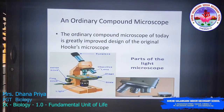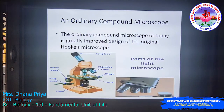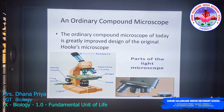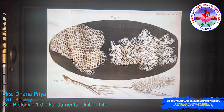In this compound microscope, you can see the eyepiece at the top. Above the stage, you can see the objective lens. On the stage, you can place the slides. Below the stage, you can see the light source. There are also two adjustment knobs — coarse and fine adjustments.